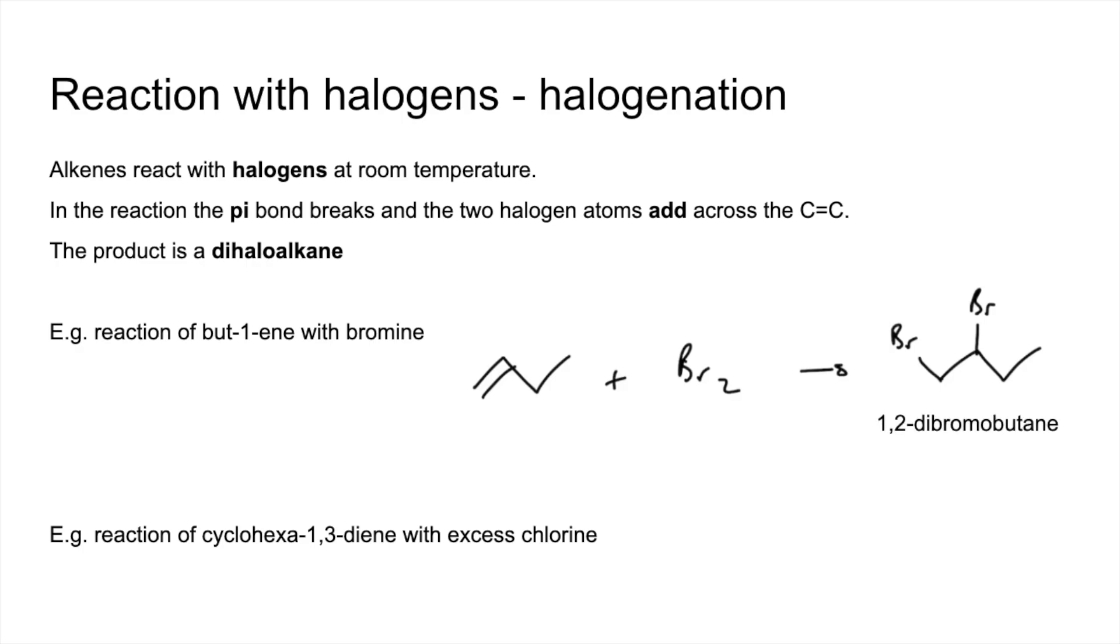And there's an important thing to know about this reaction. The bromine would be decolourised. So whenever there's a carbon-carbon double bond reacting with bromine, the bromine is decolourised. It goes from an orangey-yellow colour to colourless. And that reaction is used as the test for a carbon-carbon double bond, or the test for unsaturation.